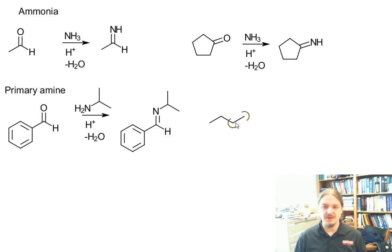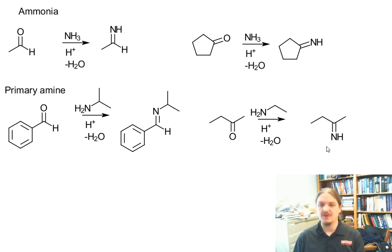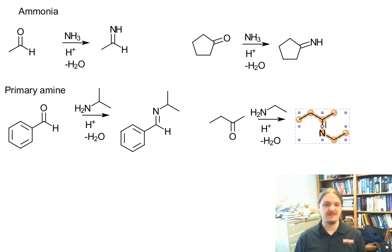Let's do a ketone example. Let's use 2-butanone and ethylamine. Again, without spending a lot of time on stereochemistry, probably this isomer is more likely because of steric reasons.